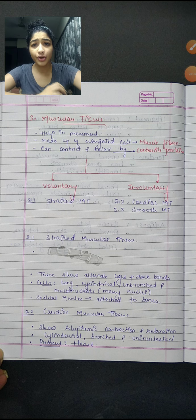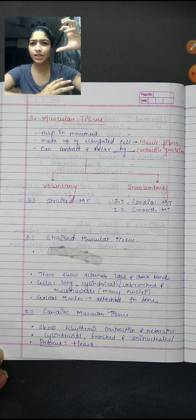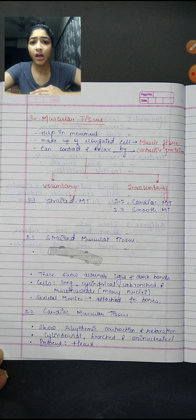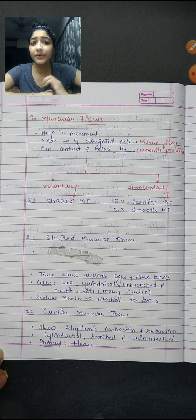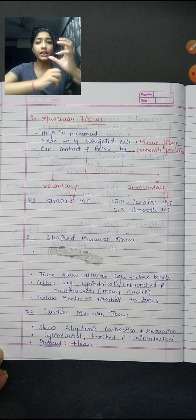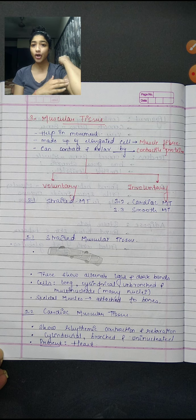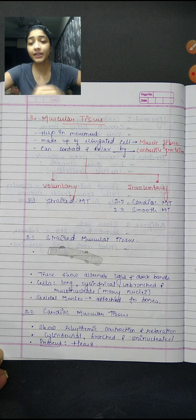Next is muscular tissue. The main work of muscular tissue is to bring about movement in the body. Muscular tissue means muscles. It is made up of elongated cells called muscular fibers, which can contract and relax. This contraction and relaxation is possible because of contractile proteins. When our muscles contract and relax, that movement is produced by contractile proteins.